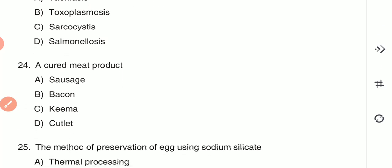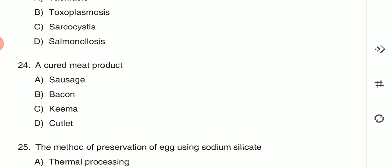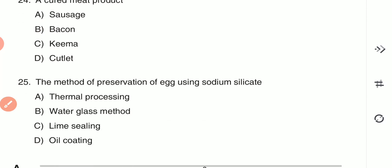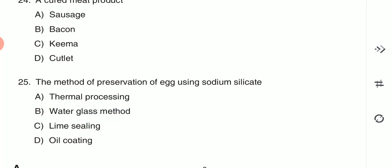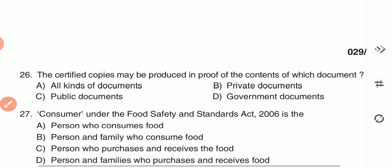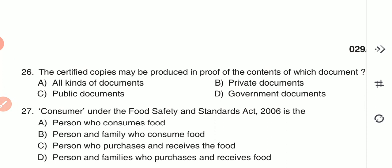Question 24: A cured meat product is known as — (A) sausage, (B) bacon, (C) keema, or (D) cutlet. A cured meat product is known as bacon — B is the correct answer. Question 25: The method of preservation of egg using sodium silicate is known as — (A) thermal processing, (B) water glass method, (C) lime sealing, or (D) oil coating. The answer is B — water glass method.